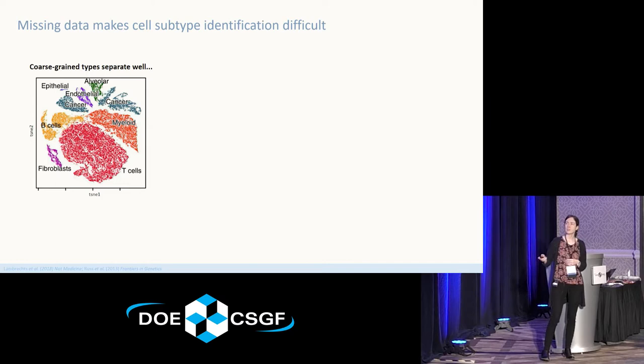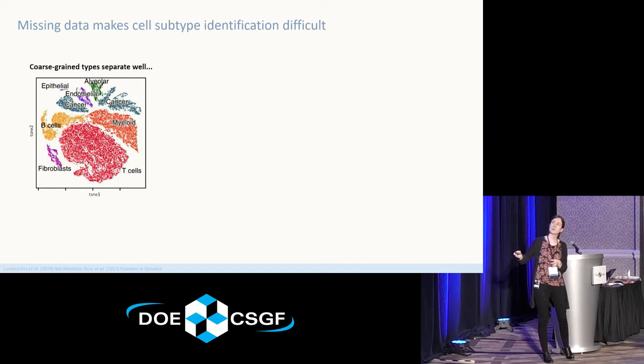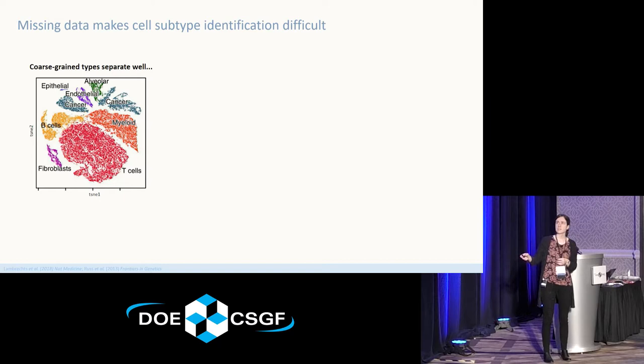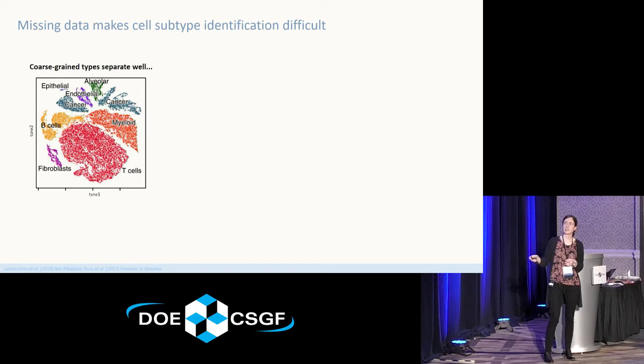The reason why this is such a problem: what I'm showing here is a T-SNE plot — basically a 2D representation of the cells where each dot is a single cell. You can see there's a clustering pattern, and as it turns out, these clusters correspond to different cell types — things like B cells, T cells, fibroblasts, and so on. That all works out fine.